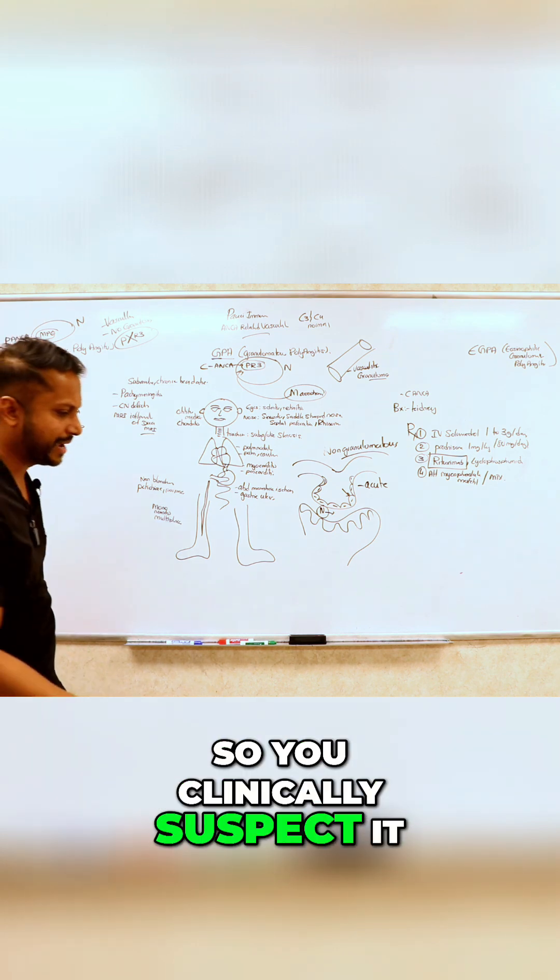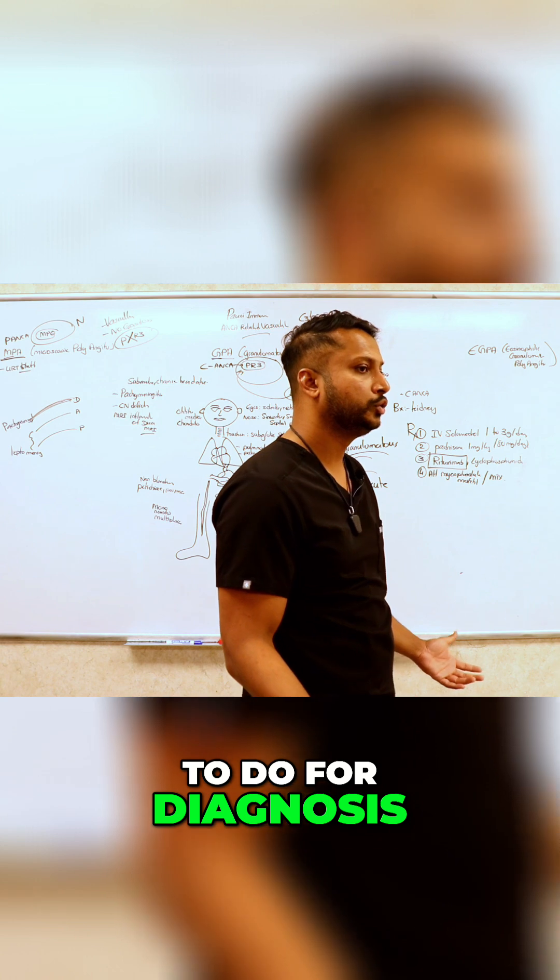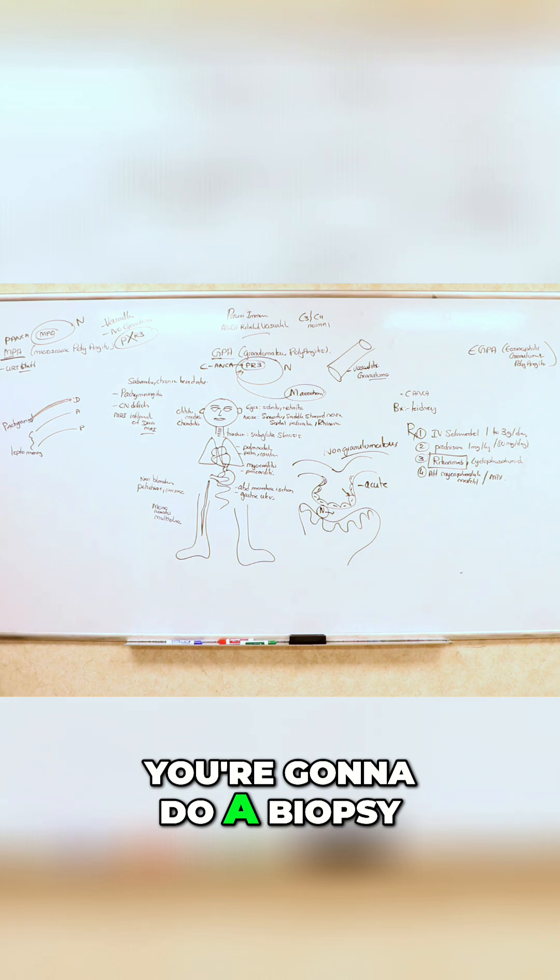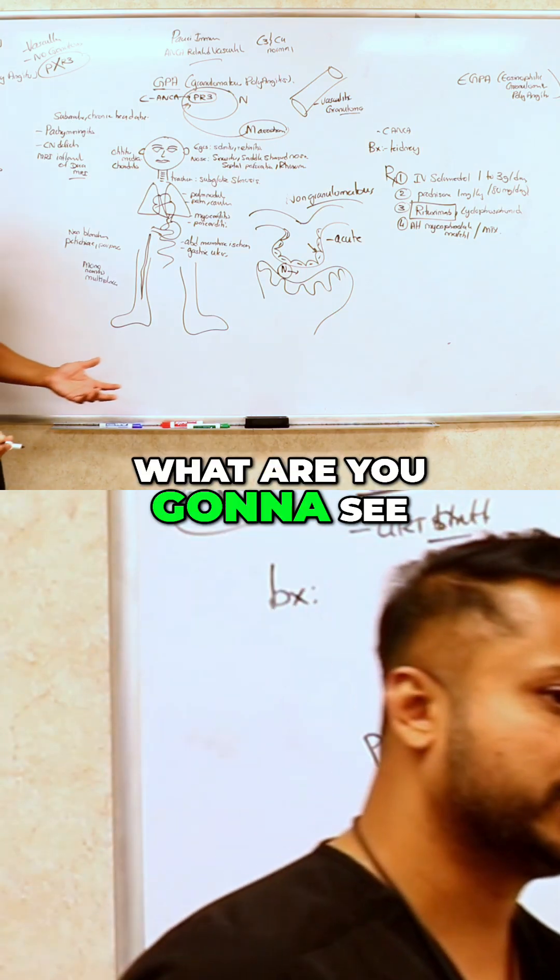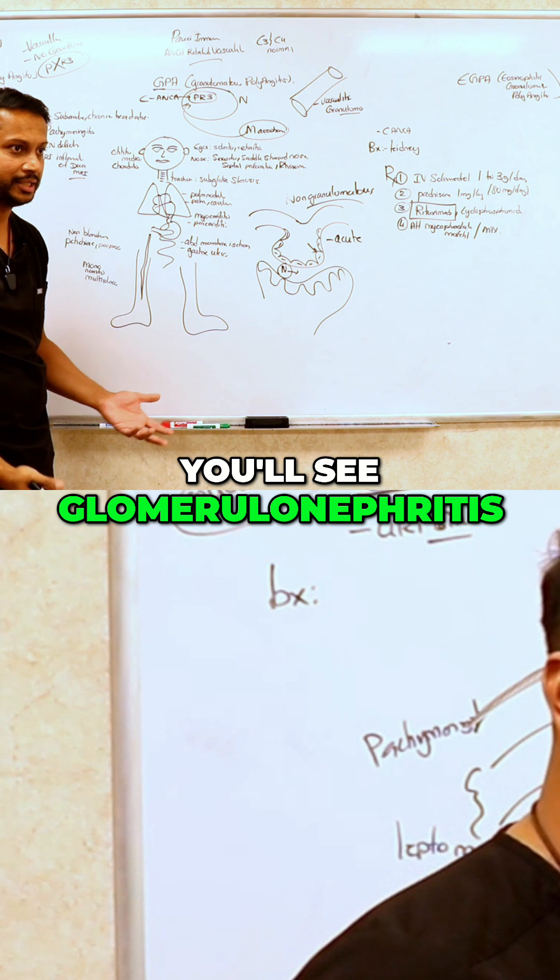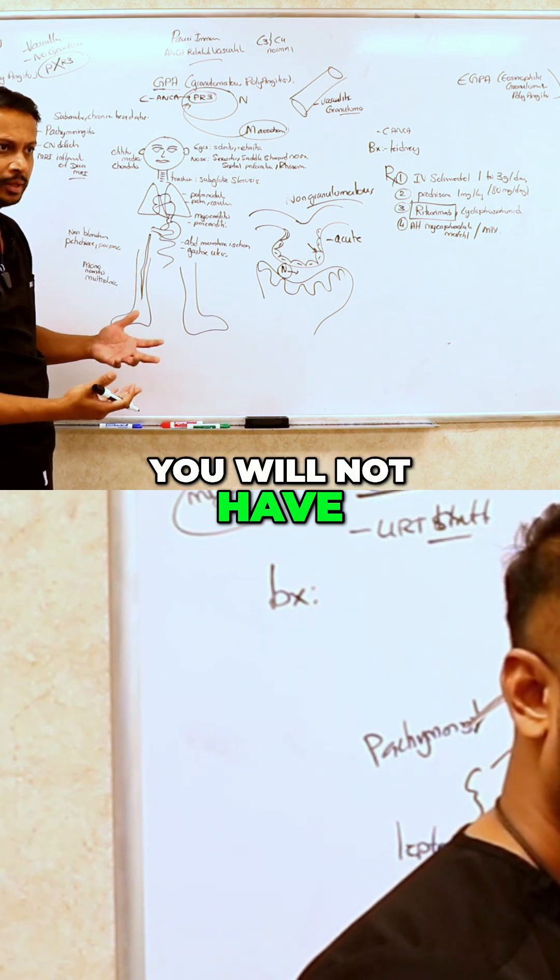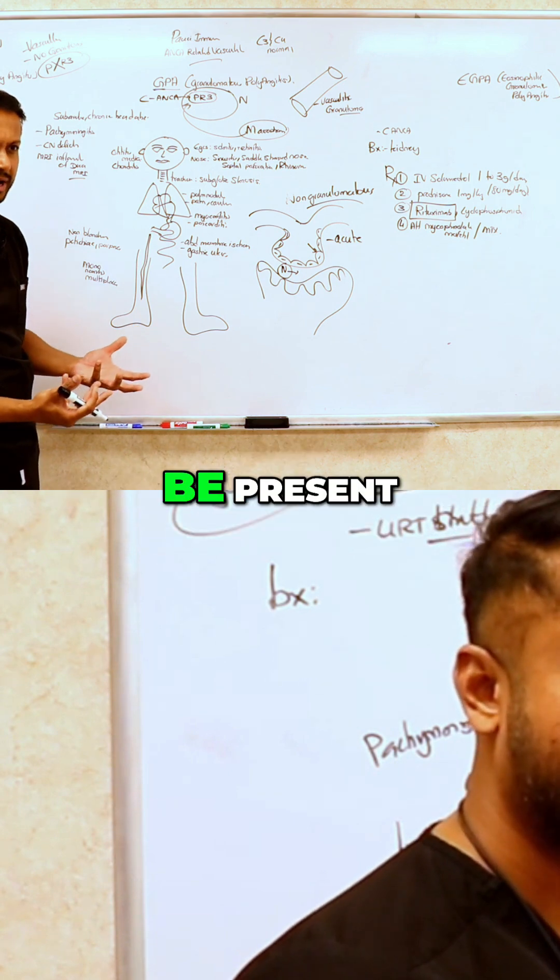All right, so you clinically suspect it. What are you going to do for diagnosis? You are going to do a biopsy, and when you do a biopsy, what are you going to see? Again, you'll see glomerulonephritis. It is going to be pauci-immune, right? You will not have any immunofluorescence going to be present. So your answer is going to come from your kidney biopsy.